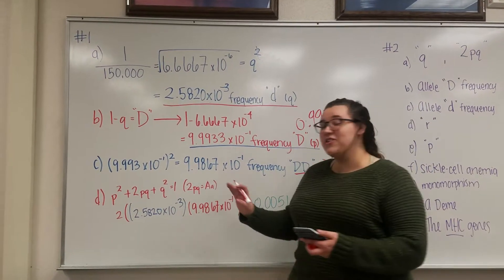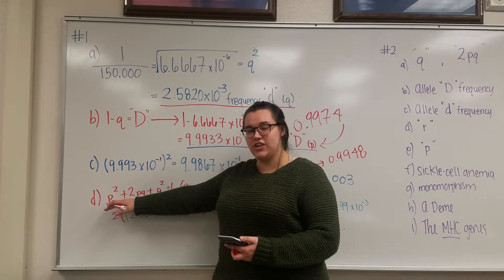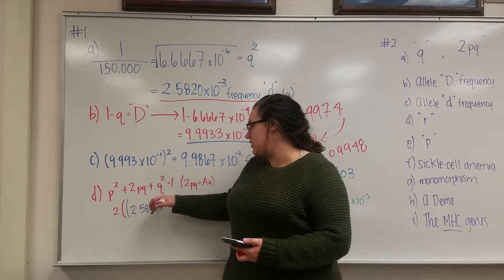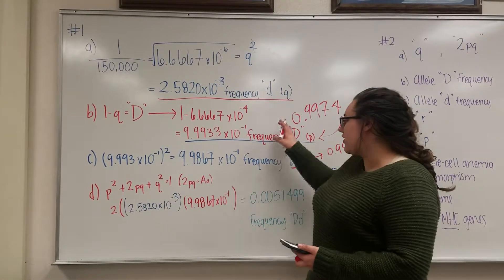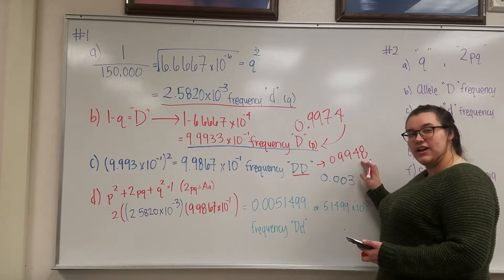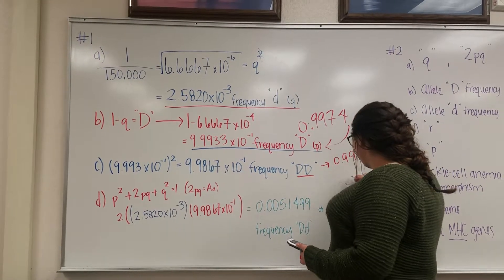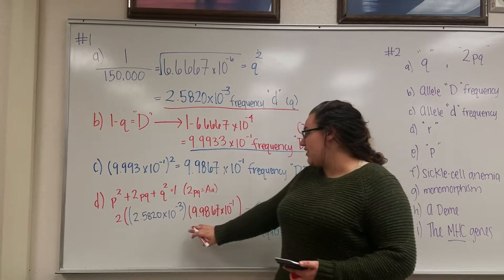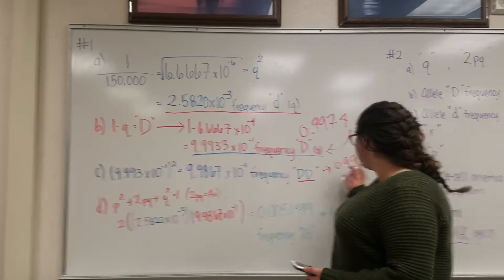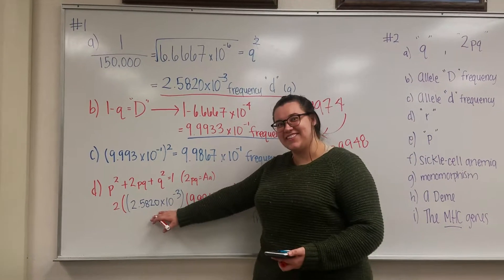And then, in order to find the heterozygous D, we then want to do, because this is your equation, so P squared plus 2PQ plus Q squared. So we've already found the P squared, which is this, the 0.9948. We need to figure out the 2PQ. So we already have this in here. So don't look at this, but this is right.